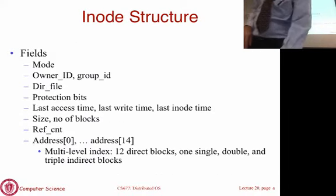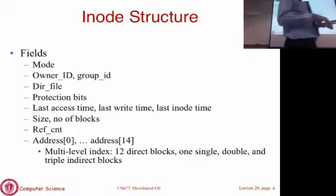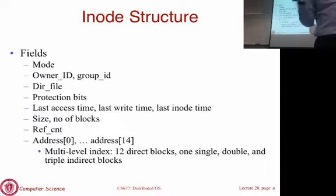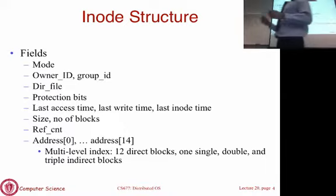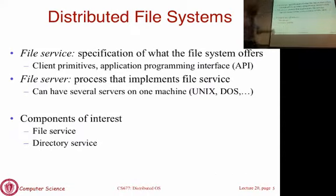With that background, let's ask: what happens if you want your file system to span multiple disks on different machines? That's why it's called a distributed file system. Next time we'll also look at disk arrays such as RAID, where files span multiple disks connected to the same machine. We'll start with some basic definitions, distinguishing the file service from the file server.